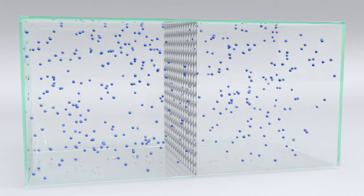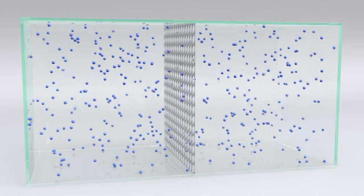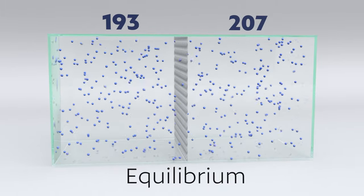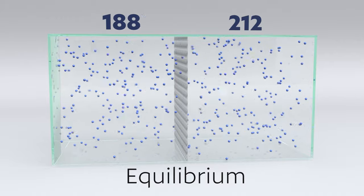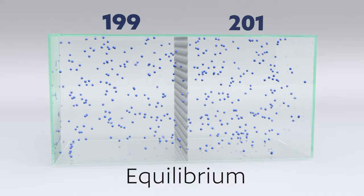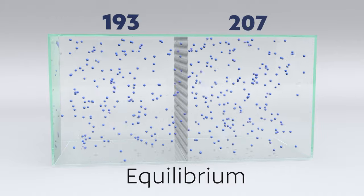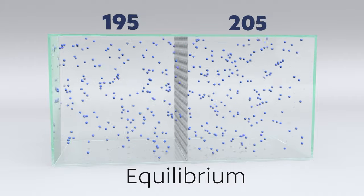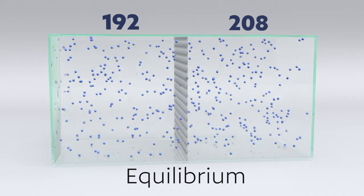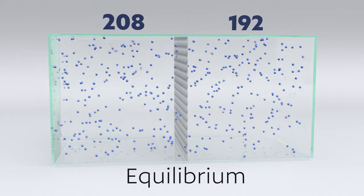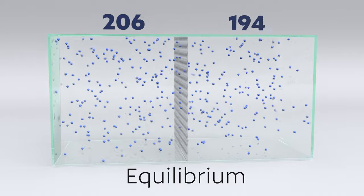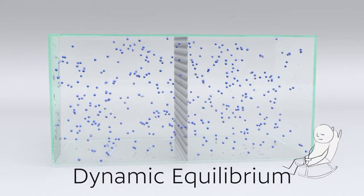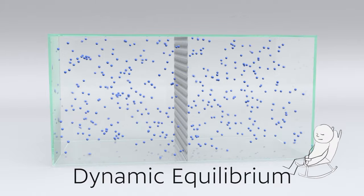Eventually, after a period of time, we can say that the system is at equilibrium, because there's about the same concentration of particles on both sides of the membrane — and in fact everywhere in the container. There's no more significant migration, but each individual particle is still moving around, back and forth. That's important. It's a dynamic equilibrium: moving, yet balanced.